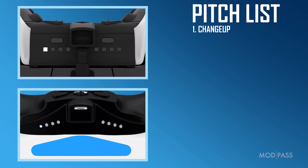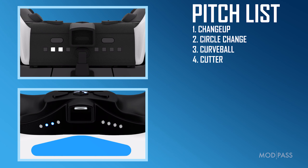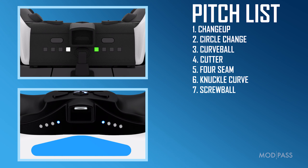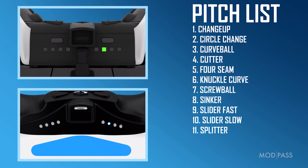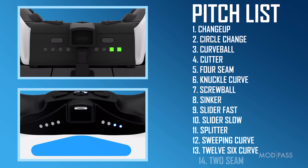The pitch types in order are: one — Change Up, two — Circle Change, three — Curve Ball, four — Cutter, five — Four Seam, six — Knuckle Curve, seven — Screw Ball, eight — Sinker, nine — Slider Fast, ten — Slider Slow, eleven — Splitter, twelve — Sweeping Curve, thirteen — Twelve to Six Curve Ball, fourteen — Two Seam.